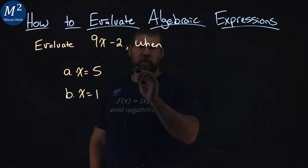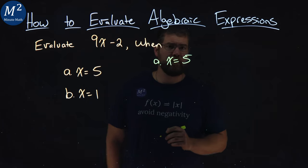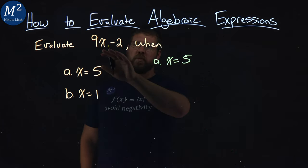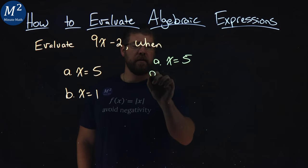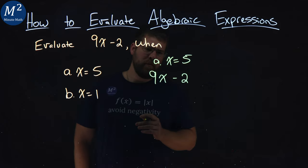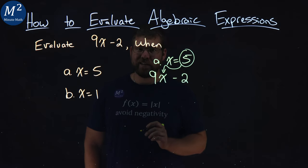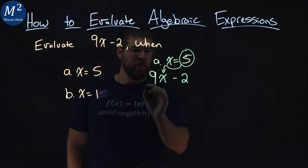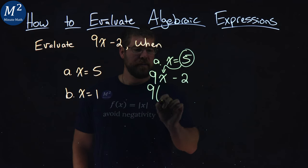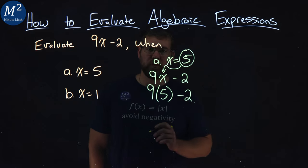Let's first start with when x equals 5. I'm going to take my algebraic expression and rewrite it, 9x minus 2. From there, I want to take this 5, and I'm going to substitute it in for x. So now I'm going to rewrite this problem, 9 instead of an x, times a 5 minus a 2.